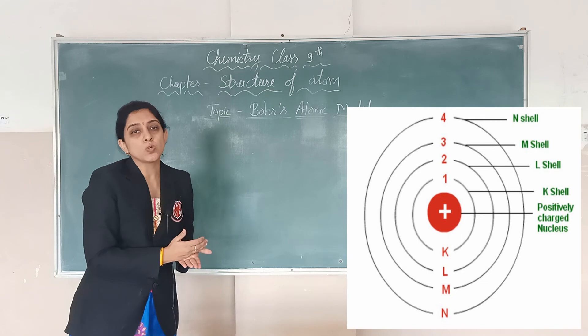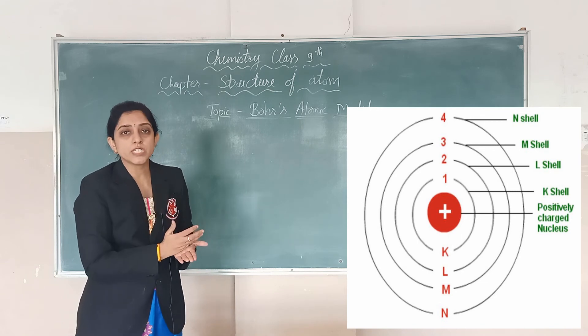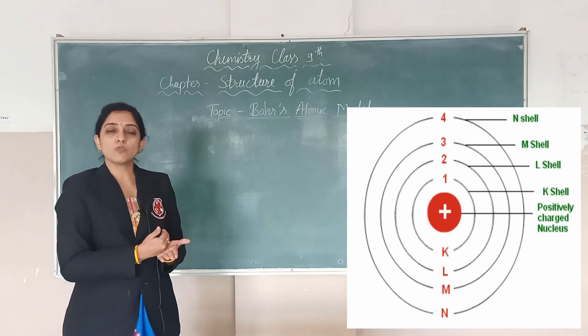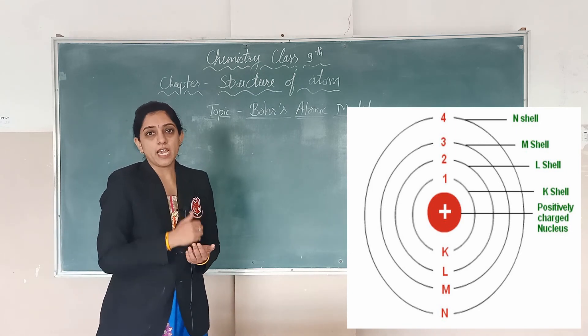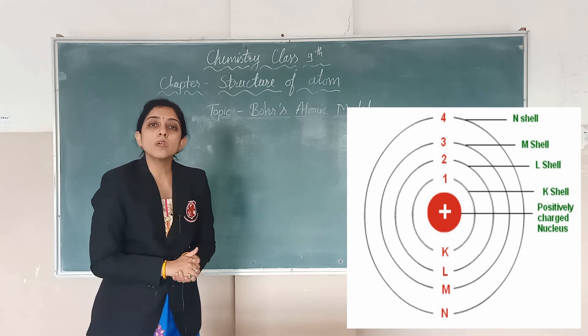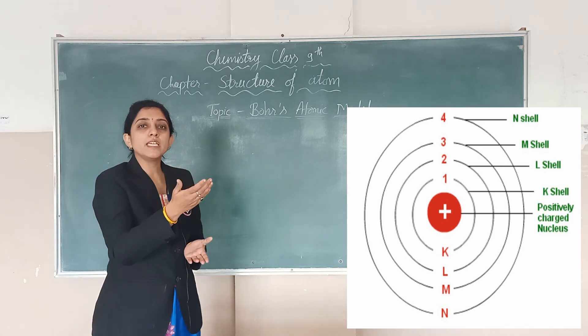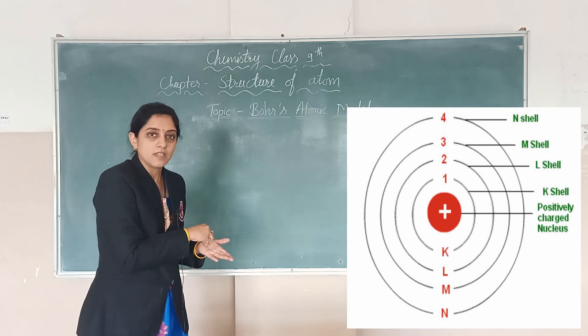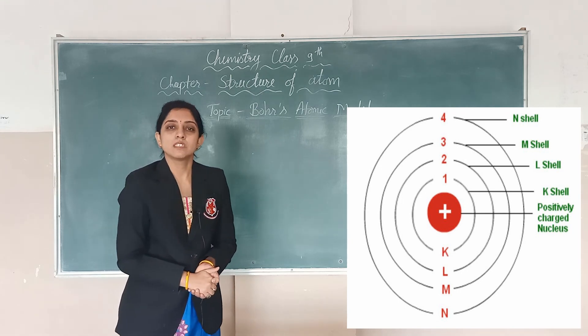And when electrons release energy, then it comes back to its original position, that ground state, but it will not come below its ground state. It means when an electron is present in K shell and it absorbs energy, it can go to L shell, and when it releases energy, it can again come to K shell. And that's why atom is stable.